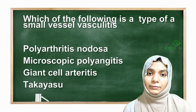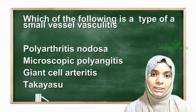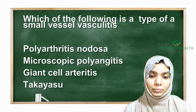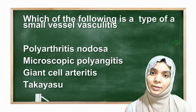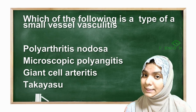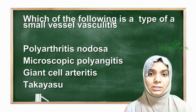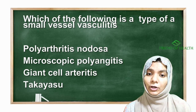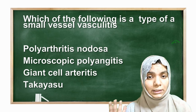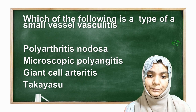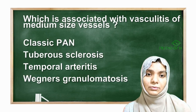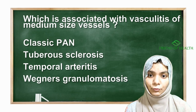Returning to the first question — which is a type of small vessel vasculitis? Working from the last option: Takayasu is large vessel (Giant Takayasu mnemonic), polyarteritis nodosa is medium vessel. So the answer is B — microscopic polyangiitis, which is a small vessel vasculitis.